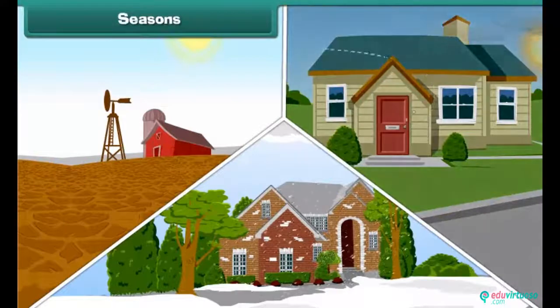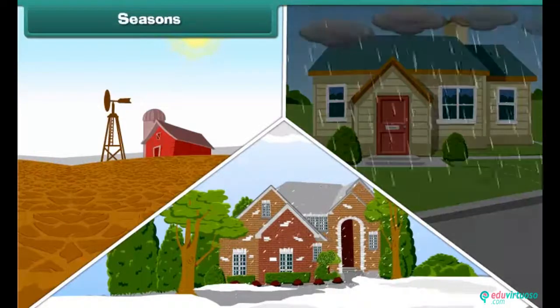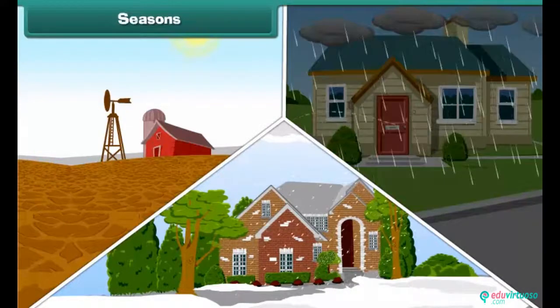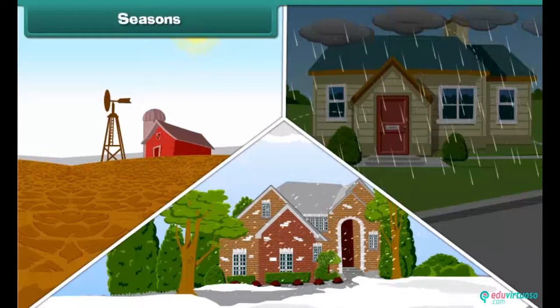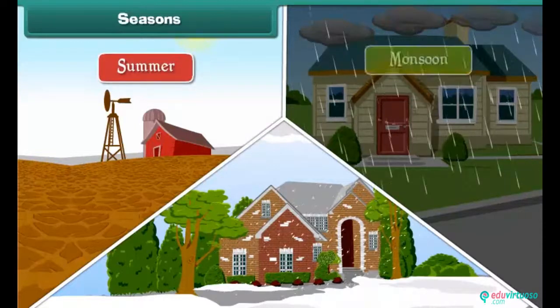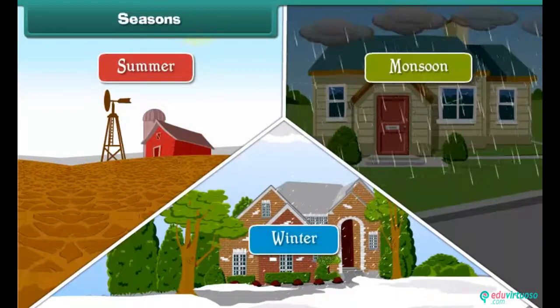There are three main seasons in India. They are Summer, Monsoon, and Winter.